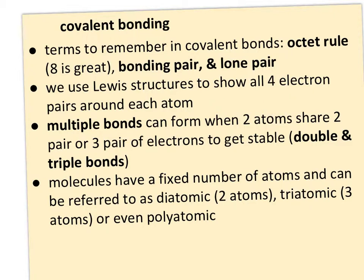Bonding pairs are shared pairs of electrons between two nuclei, and lone pairs are non-bonding pairs surrounding an atom to fulfill the octet rule. We'll use Lewis structures to show all four electron pairs around each atom. Multiple bonds can form when two atoms share two or three pairs of electrons to get stable, and they're referred to as double and triple bonds.